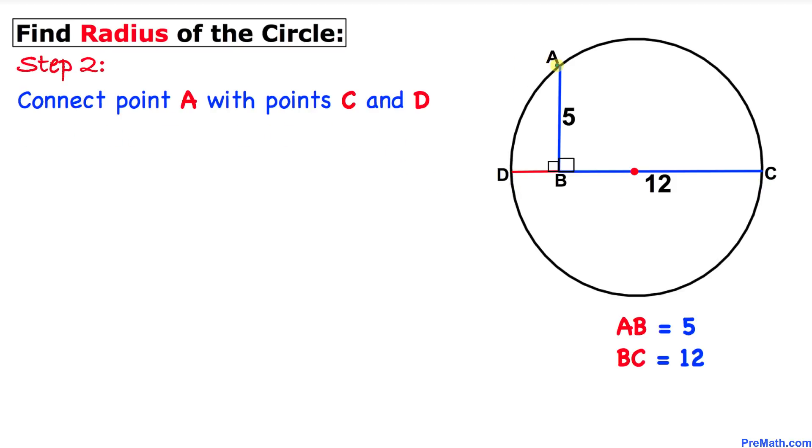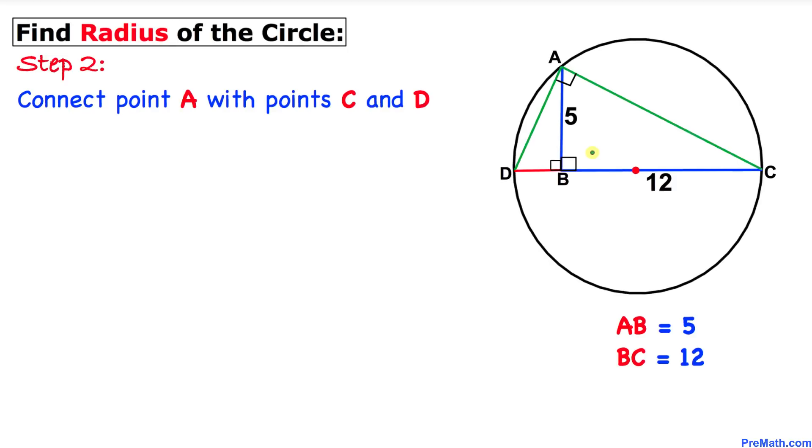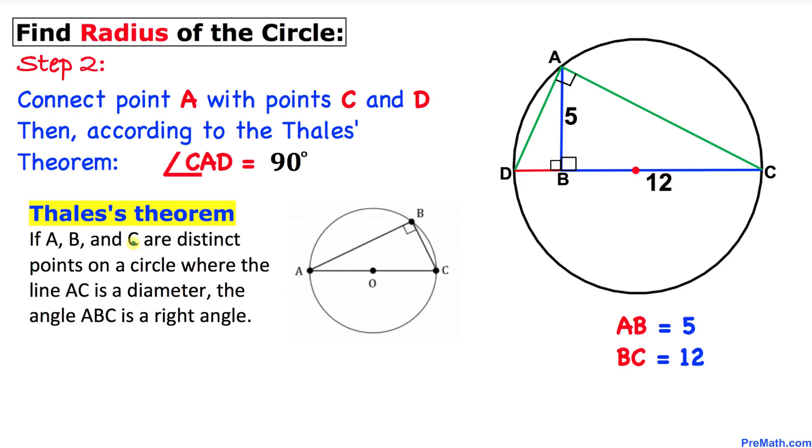Here's our next step: connect point A with points C and D. Then according to the Thales theorem, this angle CAD is 90 degrees. Here's our Thales theorem.